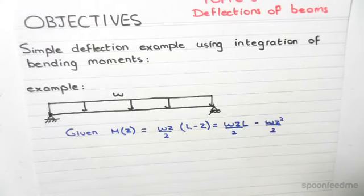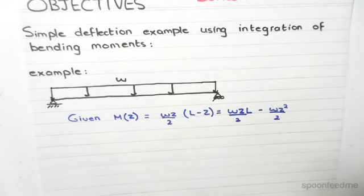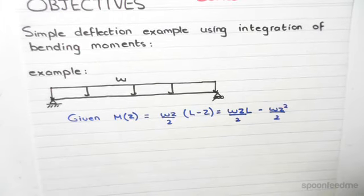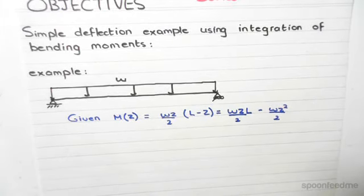This is derived for you and you don't need to worry about this. The only thing we need to worry about is deriving the equation of deflection and finding the maximum deflection, which in this case will occur at Z equals L on 2, which is the midpoint.